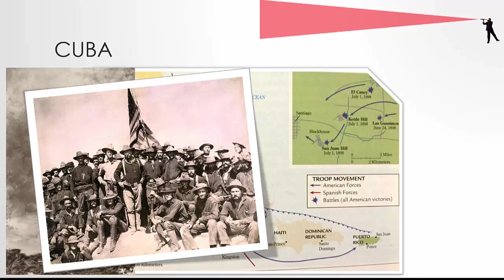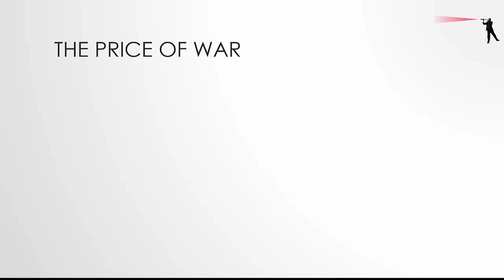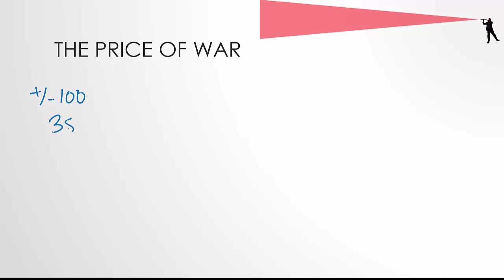The charge was successful and contributed to the American victory that day. While Roosevelt emerged from the battle unscathed, the attack resulted in nearly 100 of his soldiers being killed or wounded. The Americans took the field and the Spanish would soon abandon Santiago and surrender the island of Cuba. Only about 385 American soldiers were killed in the entire war, so about 10% of those deaths were in Roosevelt's charge.